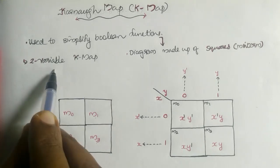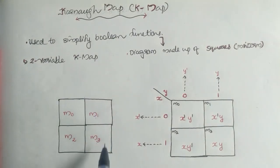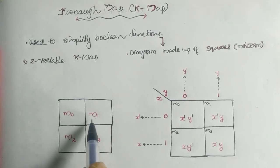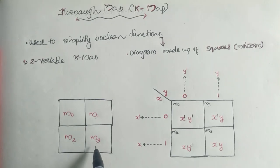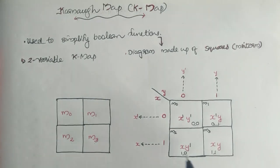If you are using a two-variable K-Map, then you can have four squares, with each square representing different minterms: minterm zero, minterm one, minterm two, and minterm three. Let's look into details.